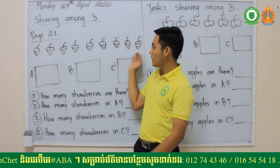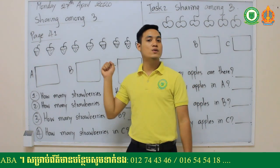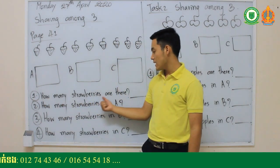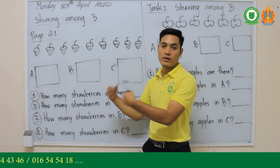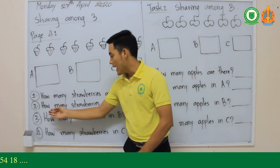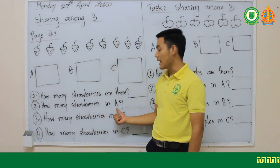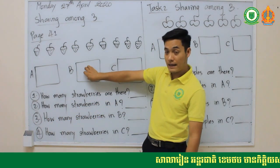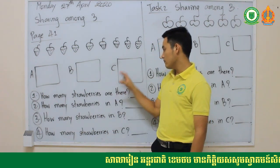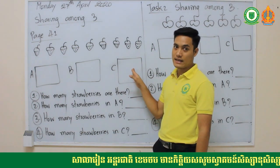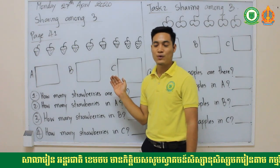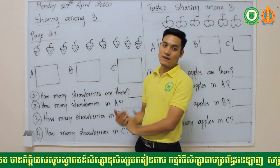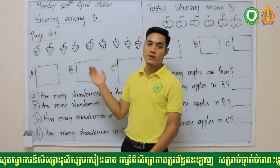Before showing how to share among three, let's look at four questions. Question one: how many strawberries are there? Question two: how many strawberries in A? Question three: how many in box B? Question four: how many in box C? We can't answer yet because we haven't done the sharing. Let's do it first — count the strawberries together.